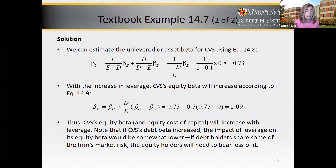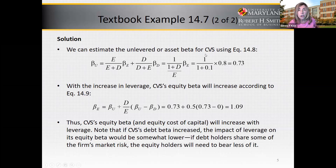With the increase in leverage, CVS's equity beta will increase according to equation 14.9 in the text. The equity beta equals the asset beta plus the debt-equity ratio multiplied by the asset beta minus the debt beta. Since the debt beta equals 0, the equity beta equals 0.7273 plus 0.5 times 0.7273 minus 0, which equals 1.0909. Let me share the Excel with you and show you how I did this work.